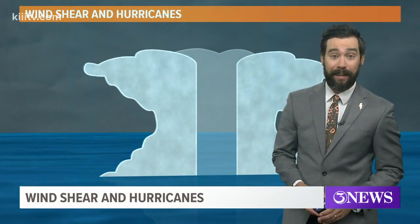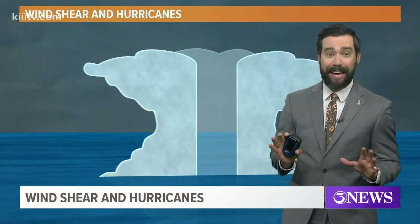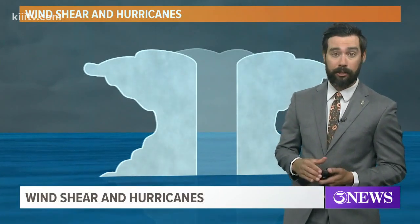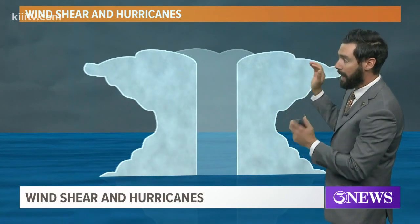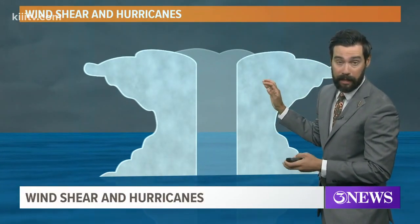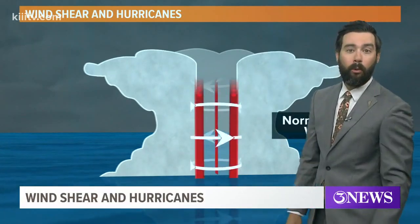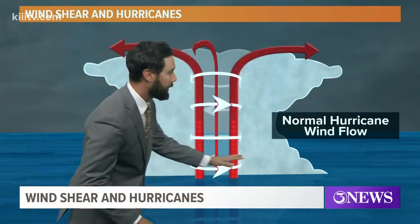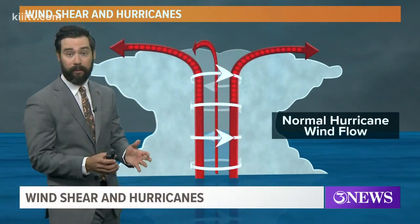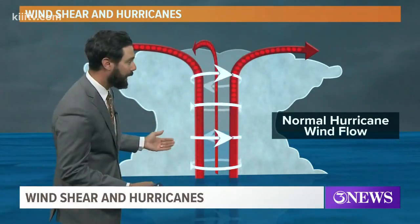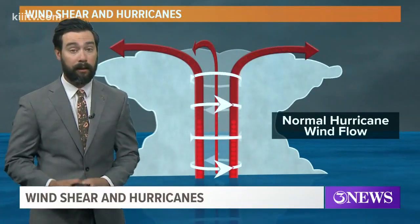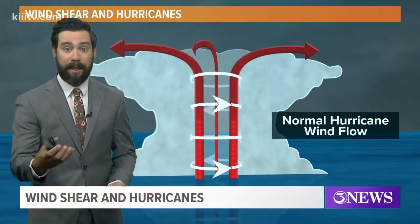Wind shear and hurricanes — hurricanes don't like wind shear. Wind shear is a change in wind speed and direction with height. When you have wind shear, you probably don't have hurricanes, because these are what's called warm core barotropic low pressure systems. That's just a fancy way to say there's no temperature difference at the surface. It's a low pressure feature that thrives on the warm tropical waters we observe June through November in the tropics.